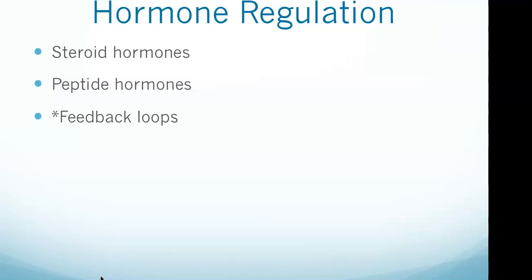Peptide hormones are fat soluble and can pass freely through the plasma membrane, binding to receptors inside the cell. They induce changes in cellular gene expression and their effects are longer lasting compared to steroid hormones. The body maintains homeostasis through positive and negative feedback loops. Positive feedback loops are rare — an example is giving birth. Negative feedback loops are more common, involving a deviation from normal followed by a response that negates further action, such as glucagon being released in response to low blood glucose to restore the desired blood glucose level.